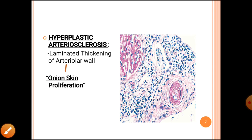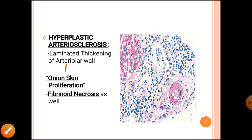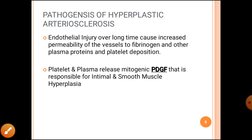The second most important feature of hyperplastic arteriosclerosis is endothelial injury, which causes plasma, fibrinogen, and fibrin material to leak out. This fibrin material deposition is known as fibrinoid necrosis. So the two most important changes in hyperplastic arteriosclerosis are onion skin proliferation and fibrinoid necrosis.